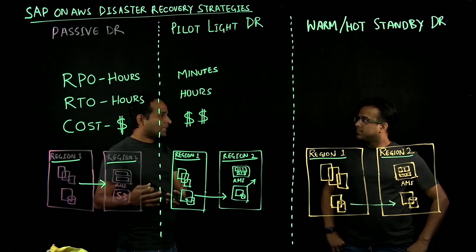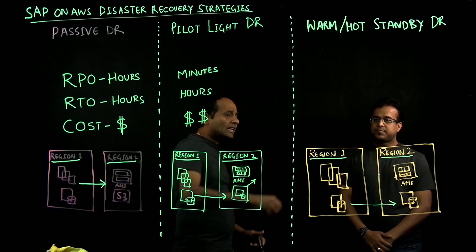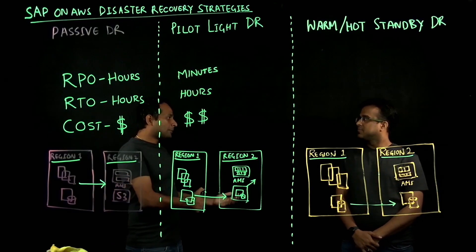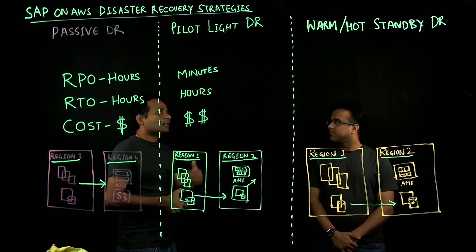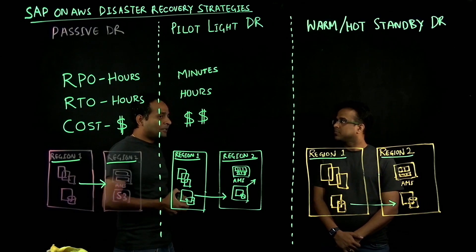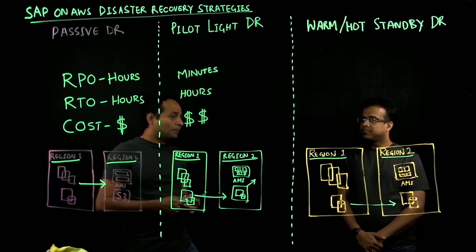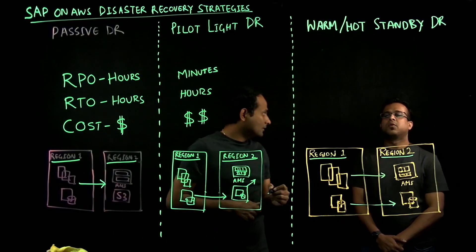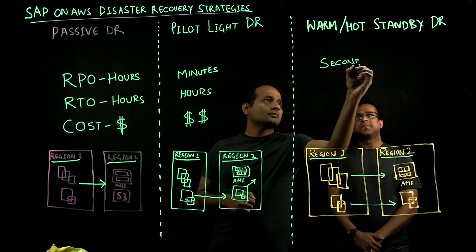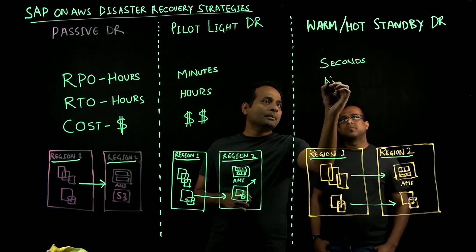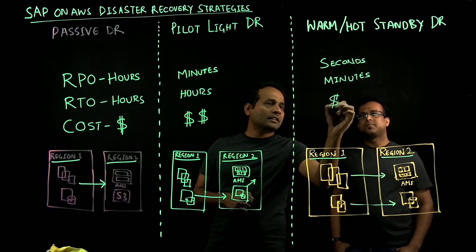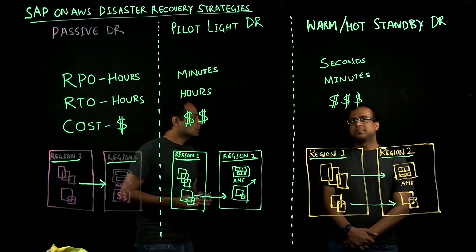When it comes to the app layer, in warm standby DR, if you have 10 app servers, you can go with two or three and save on the active compute. But if you want to match like for like and protect against any possible RTO or RPO issues, that is where you rely on hot standby — matching everything from the app layer as well. In this approach, the RPO is going to be seconds, your RTO is going to be minutes, and your cost is going to be more than the other two patterns discussed.